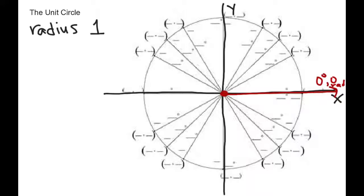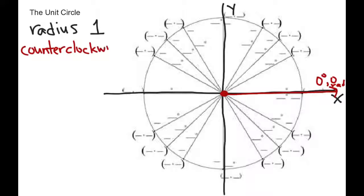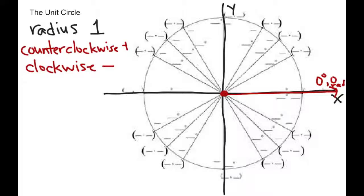All positive angles are counterclockwise from there. If you go in the counterclockwise direction, those are the positive angle measurements. If you go clockwise, those are going to be our negative angle measurements. I know it can be confusing when you think about the direction of a clock, but that's the way it works.